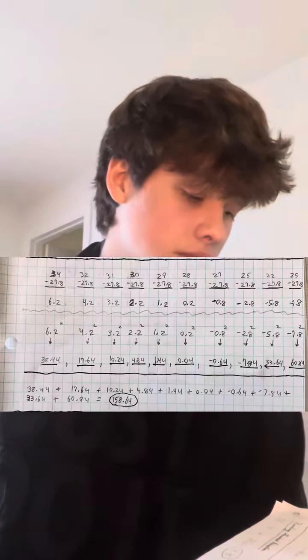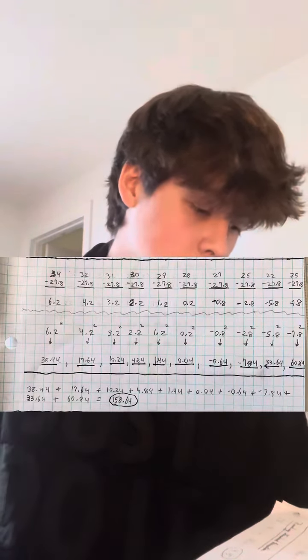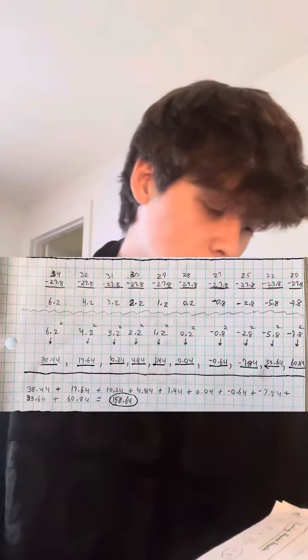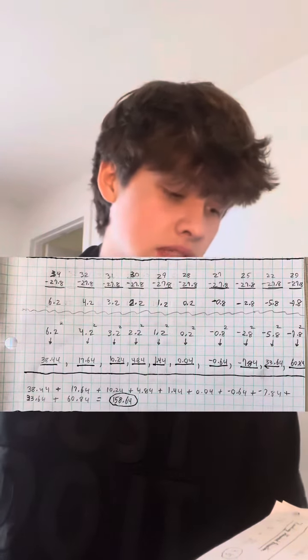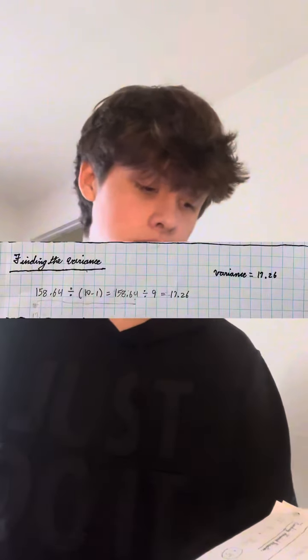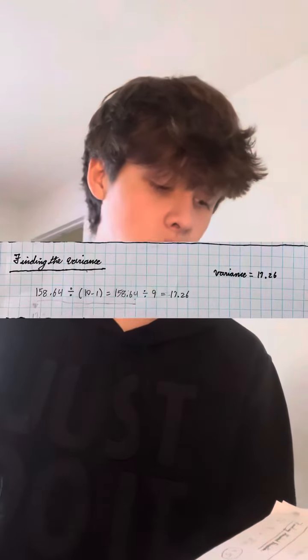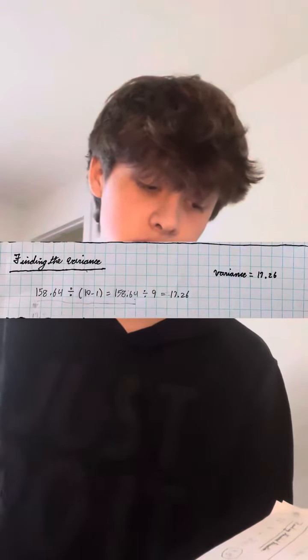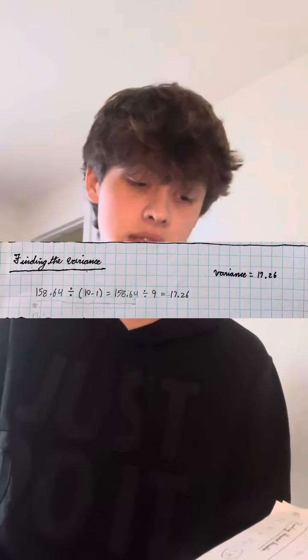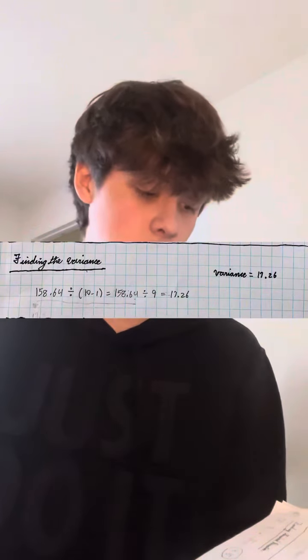I then had to find the variance. To find the variance, I took the sum of all the new sequences, which is 158.64, and divided it by n minus 1, n being 10. I then got the sequence of 158.64 divided by 9, which is 17.26, making the variance 17.26.